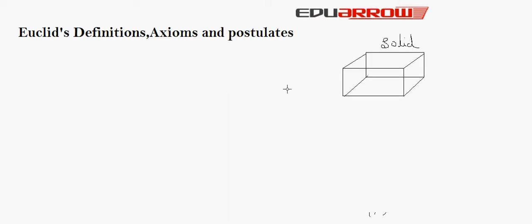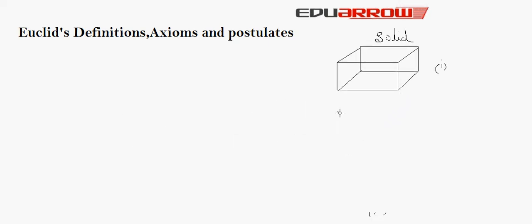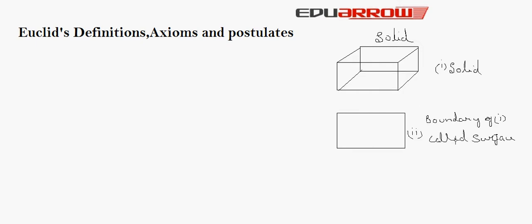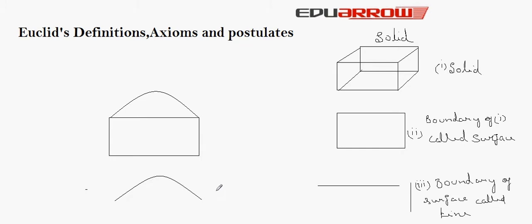According to Euclid, a solid has shape, size, position and can be moved from one place to another. The boundary of this solid is called the surface. The boundary of a surface is called a line, as shown in figure two. If the surface is curved, then its boundary is called a curve. So, the boundary of any solid is called a surface, and the boundary of any surface is called a line or curve.